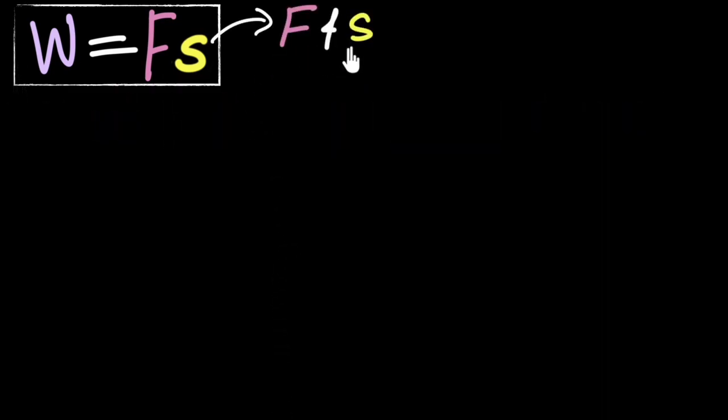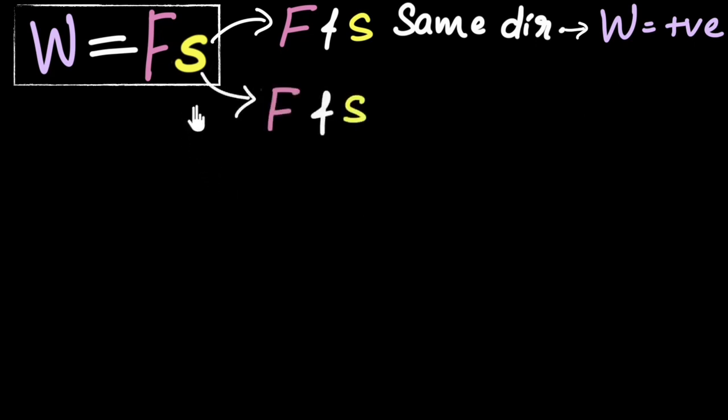Now, if the force and displacement happen to be in the same direction, that's when we say work done is positive. On the other hand, if the force and the displacement happen to be in the opposite direction, and we'll look at some examples, then we'll say work done is negative. This is when work done becomes smaller than zero because a negative number is smaller than zero.